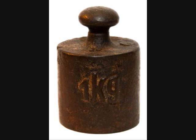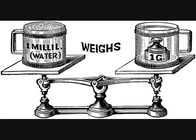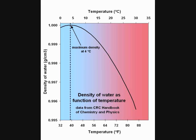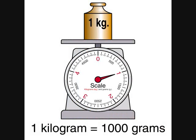Originally, one gram was defined as the mass of one milliliter of water at four degrees Celsius. This was because water's density varies at different temperatures, so only at four degrees Celsius is it one gram per milliliter. So one kilogram was then 1,000 grams.